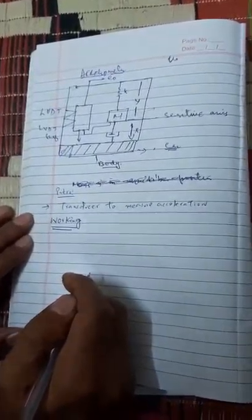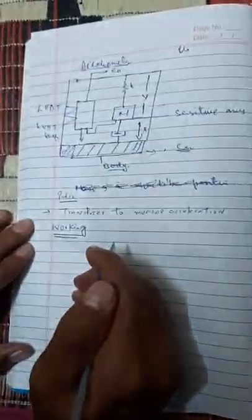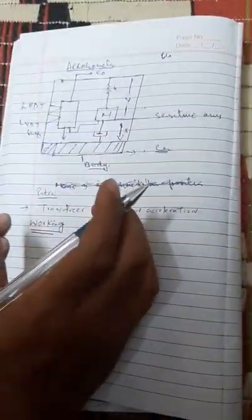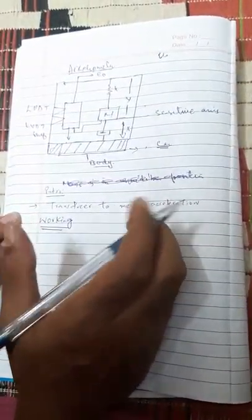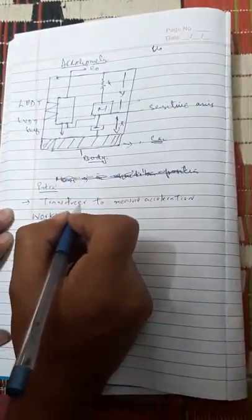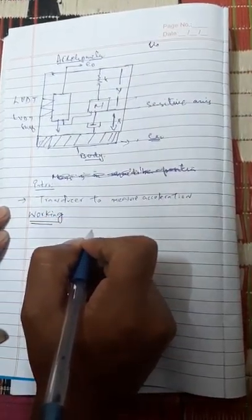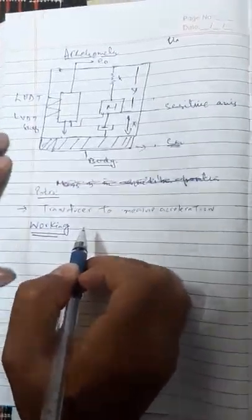Hi guys, welcome back to our AT Academy. Today we will study the accelerometer. Usually what we have made in previous videos were all about transducers. We will discuss what an accelerometer is. An accelerometer is also a transducer which helps us to measure the acceleration of an object. We usually see it in aircraft and space vehicles. Now let us discuss this diagram, how it works, then we will go to mathematical problems involving this accelerometer.